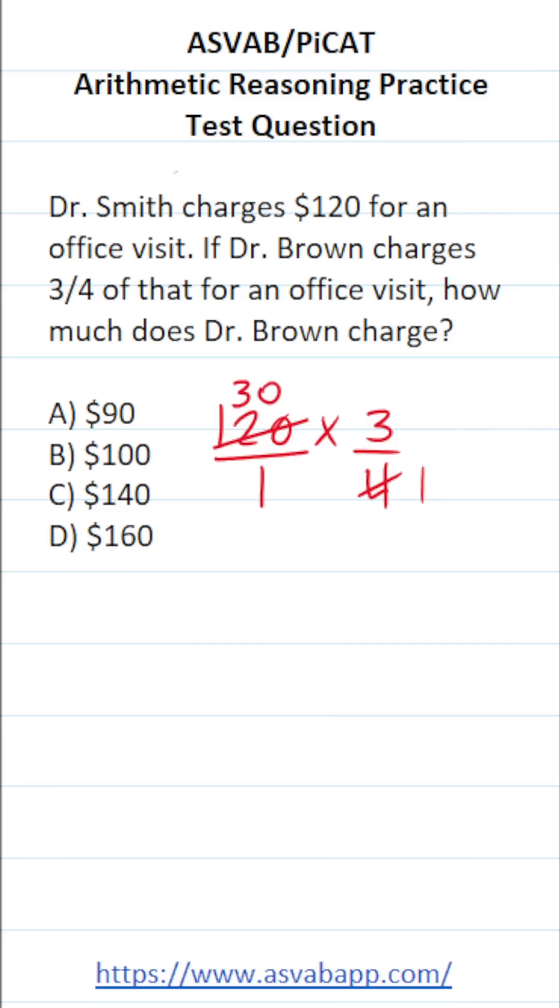Now that I've cross-reduced, this is very easy to work out. 30 divided by 1 is 30. 3 divided by 1 is 3. 30 times 3 is 90. As you can see, three-fourths of $120 is $90. In other words, Dr. Brown charges $90 for an office visit.